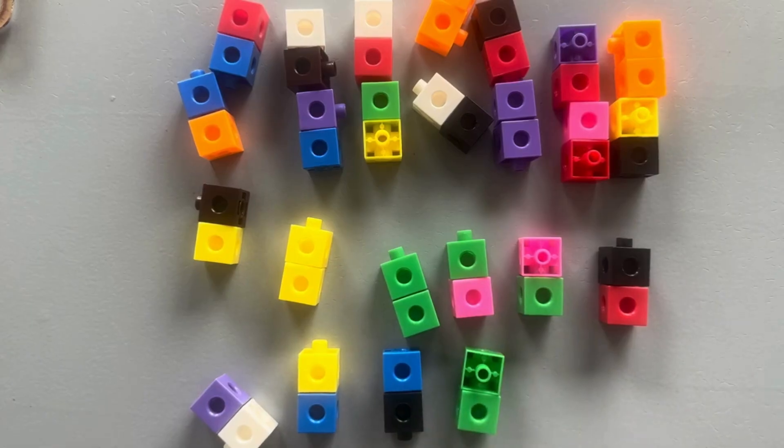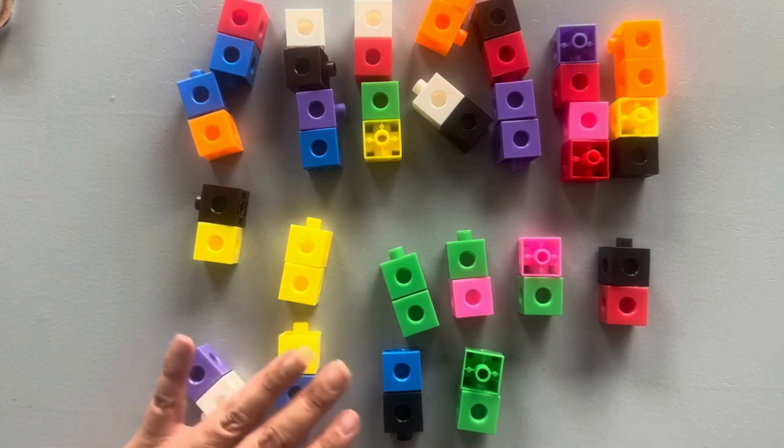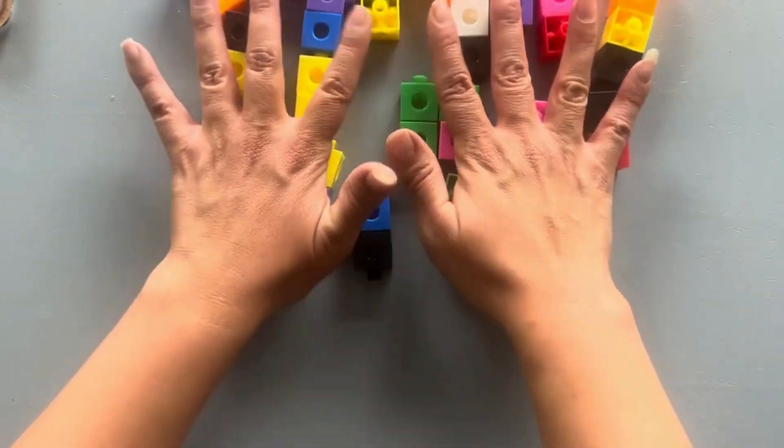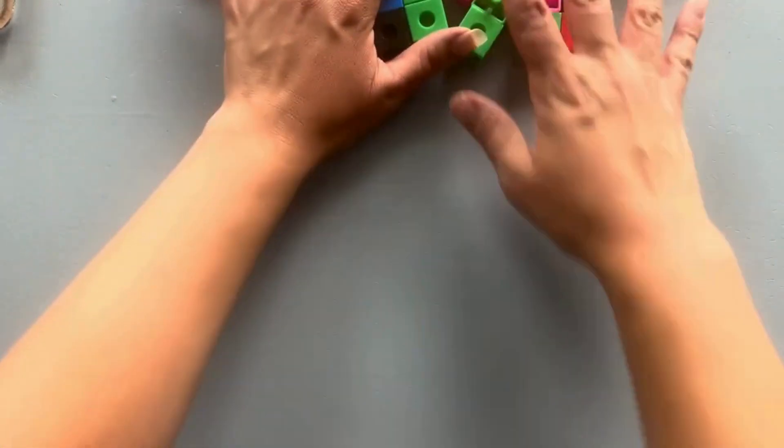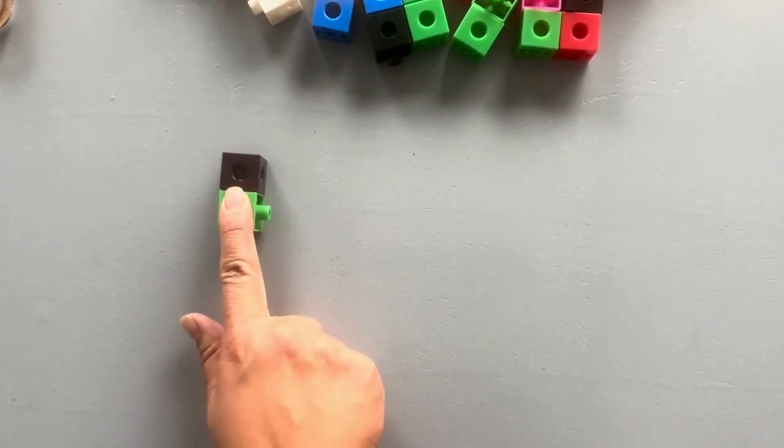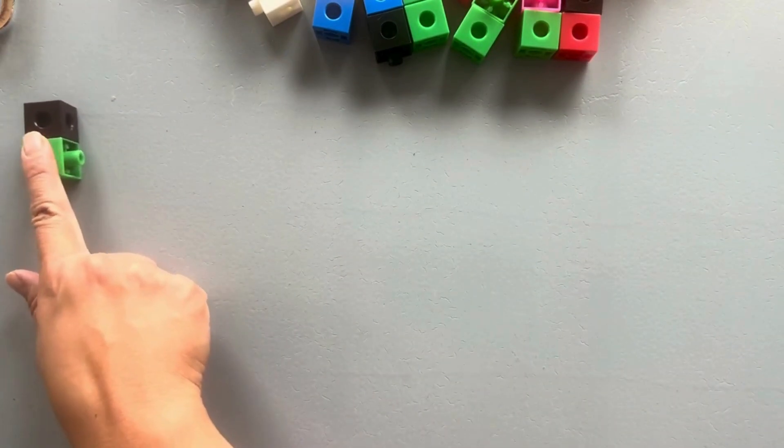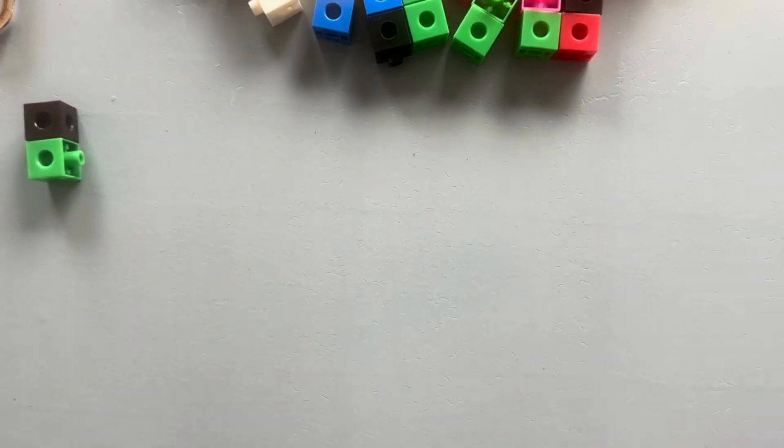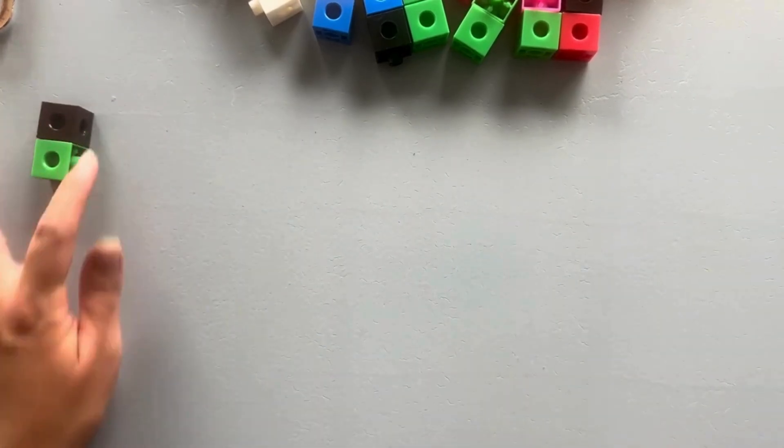We gotta count by twos. So, we got fifty here, but we can go farther than that, can't we? So what comes after fifty, everyone? We just counted fifty. What's this one? Fifty-one. Well, if we're counting by twos, it goes fifty.